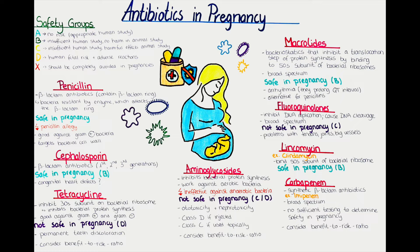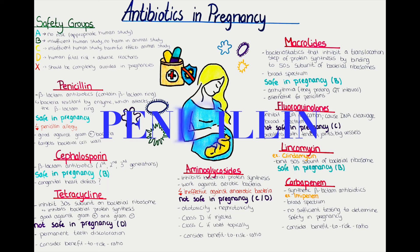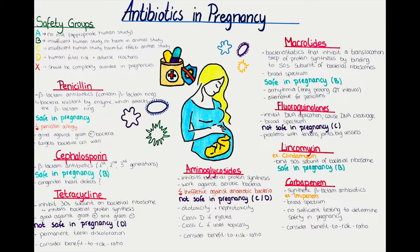Now let's go back to the antibiotic classes and talk about them individually. First off, let's start with the penicillin class. This is appropriate since the penicillins are the first true antibiotics to be discovered. They were discovered by Alexander Fleming in 1928. Penicillins are a group of beta-lactam antibiotics. The beta-lactam antibiotics contain a beta-lactam ring in their structure, hence the name.